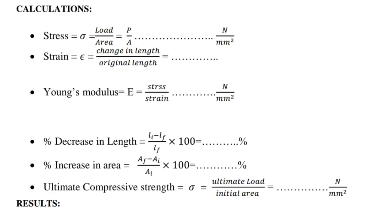Percentage decrease in length = (Li − Lf) / Li × 100. Percentage increase in area = (Af − Ai) / Ai × 100. Ultimate compressive strength σ = Ultimate load / Initial area, in N/mm².